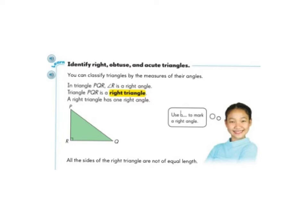The first kind of triangle that we're going to talk about is a right triangle. And a right triangle, just like it sounds, is going to have a right angle in it. So in the example we have triangle PQR, and angle R is a right angle.